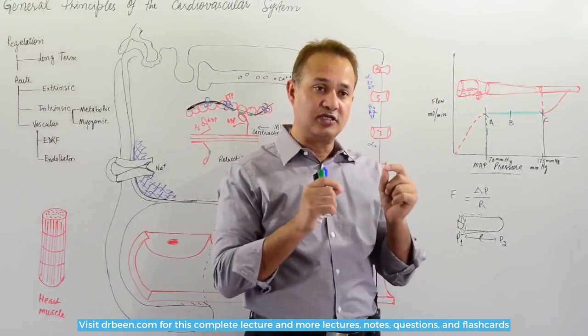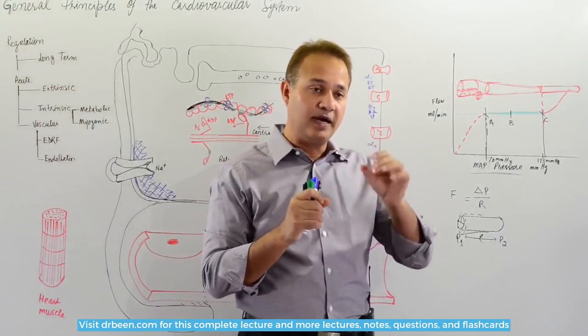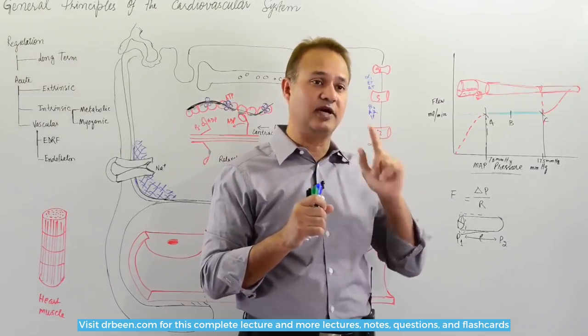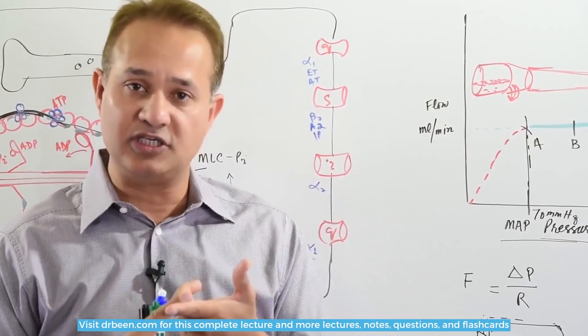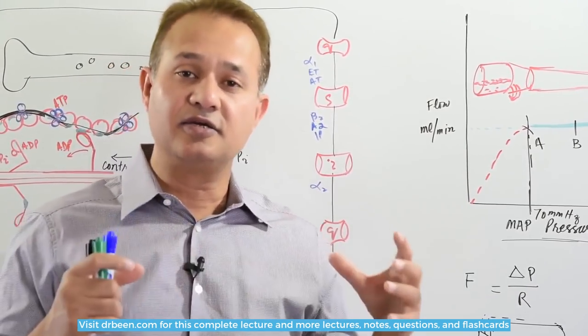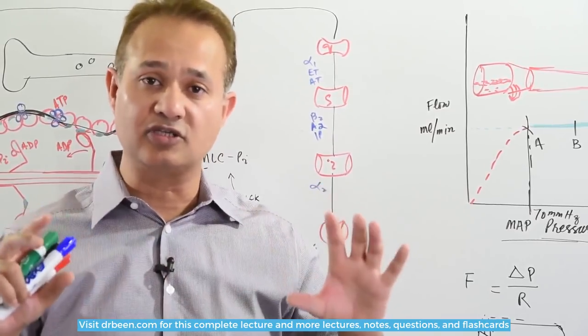the flow change will be governed by the blood vessel's diameter primarily. This is given that viscosity is not changing, the blood volume is not changing, and other physiological parameters are not changing—they are constant.